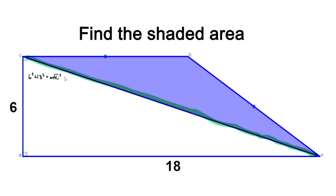Segment AC would be the hypotenuse of triangle ABC. To find the length of segment AC, we'll take the square root of 6 squared plus 18 squared, so that's the square root of 360. We can simplify that to 6 times the square root of 10.